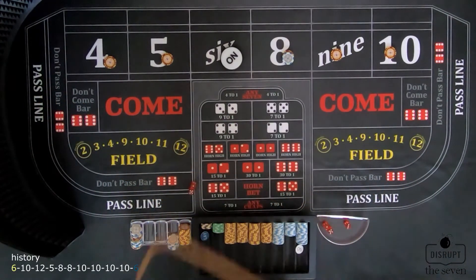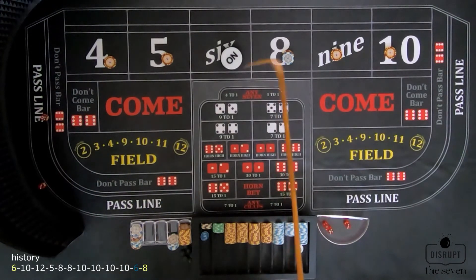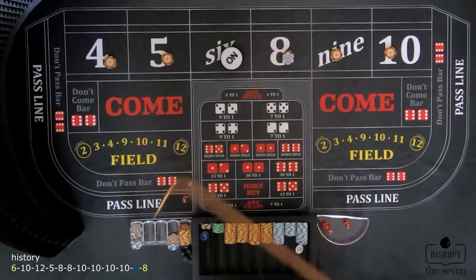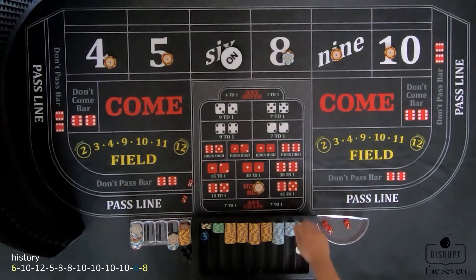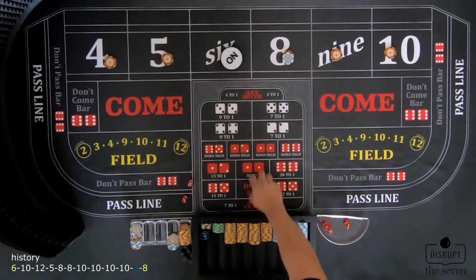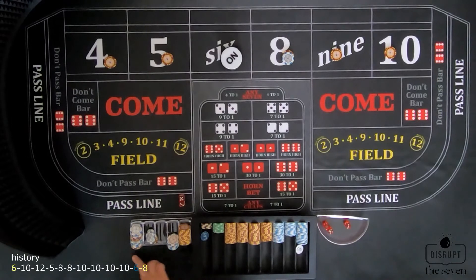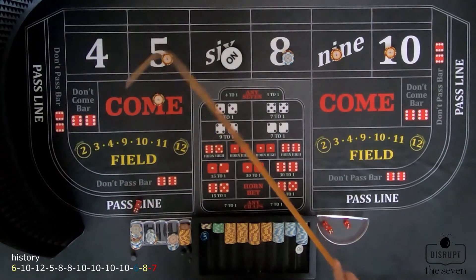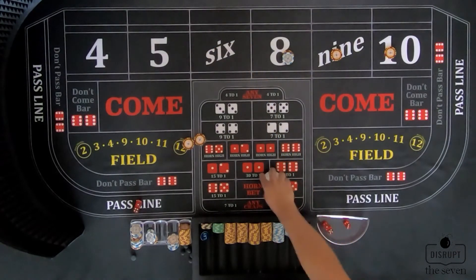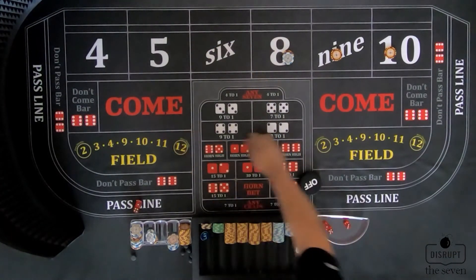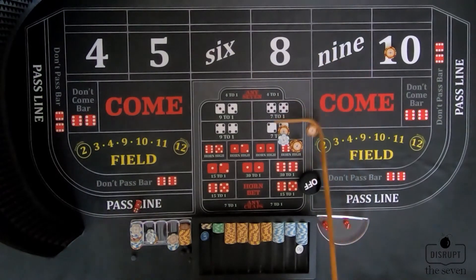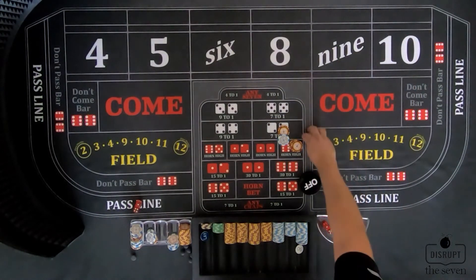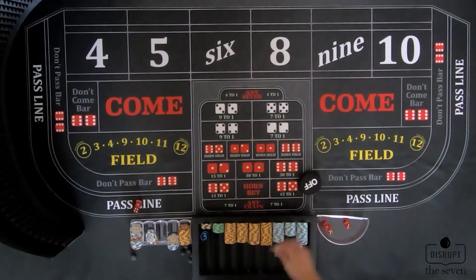Shooter rolls again and a 7 comes up — 4-3, 7 out. We lose the $26 across. Puck is off and a new shooter gets their turn. Now we wait for a new shooter because we don't want to bet on the come out roll, so we're playing it safe.